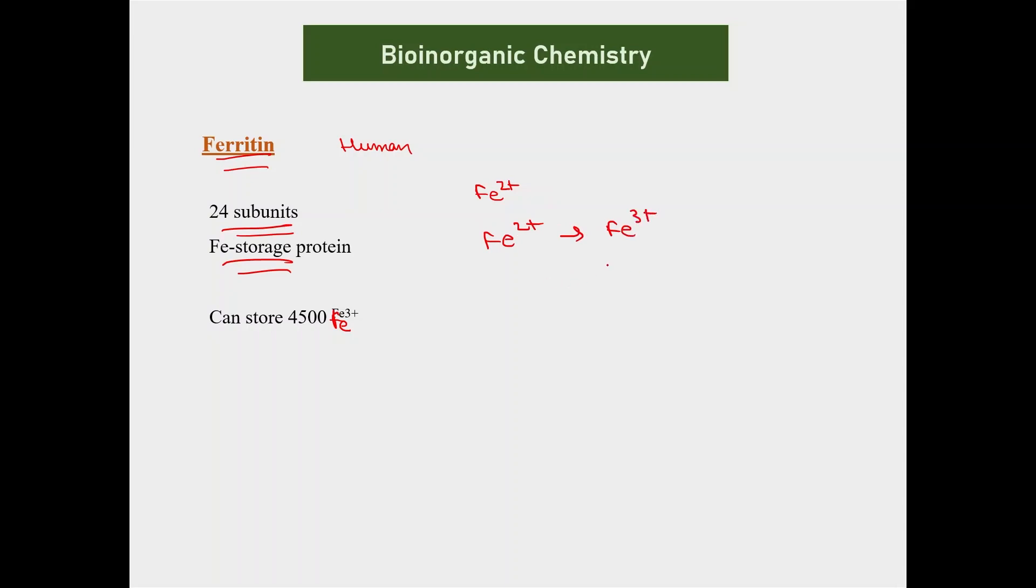And whenever required, this iron is used for various biological functions inside the body. So ferritin is a metal storage protein. The metal which it stores is iron. So we know that ferritin is metal storage.